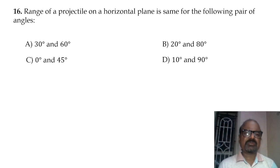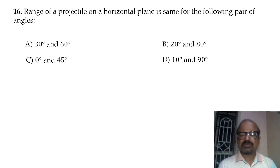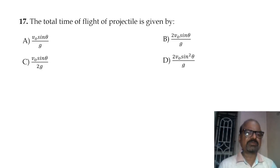The range of a projectile on a horizontal plane is the same for complementary pairs of angles. Using the formula with sine 2-theta, the answer is 30 degrees and 60 degrees.